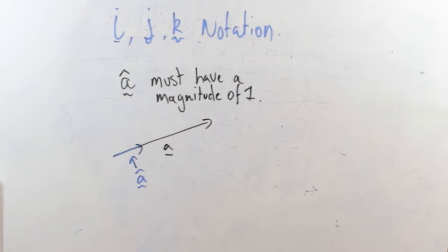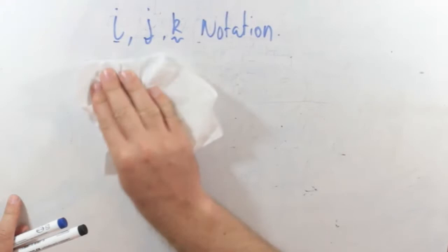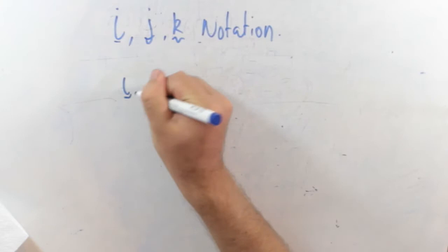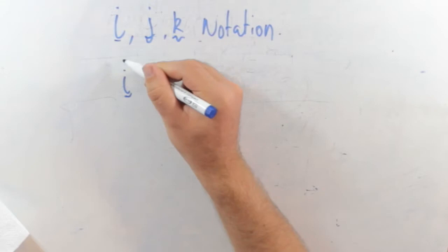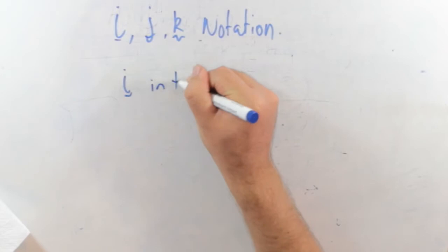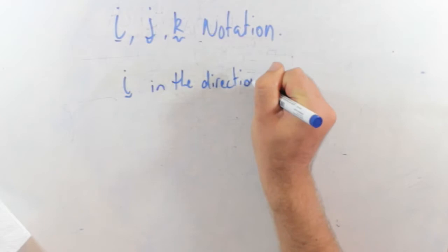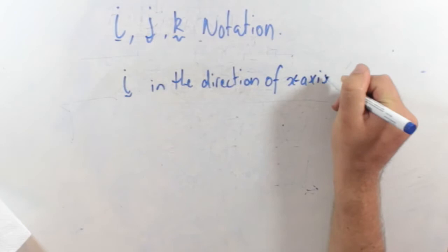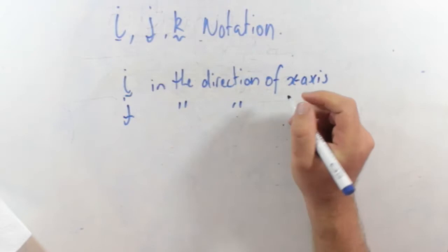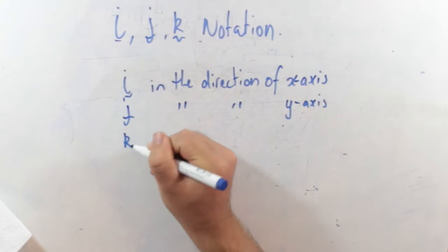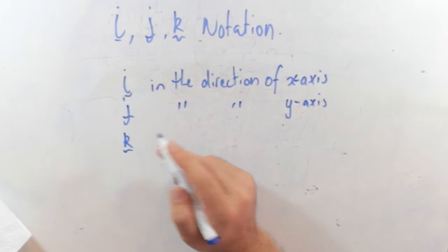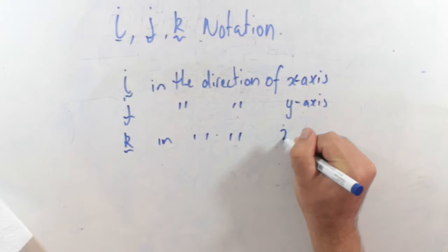All right, so for the i, j, k notation this is important because we have vector i. Now vector i is a unit vector, so we just leave the hat off though. So by definition, we know that vector i is a unit vector in the direction of the x-axis. j is a unit vector in the direction of y-axis. Unit vector k is in the direction of z-axis. So this is in three dimensions, i, j, k.